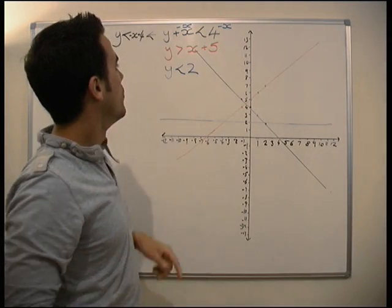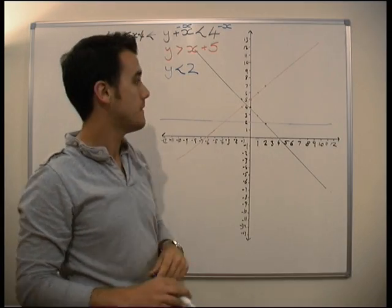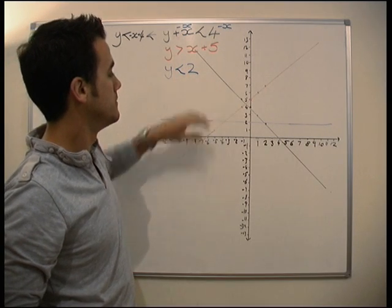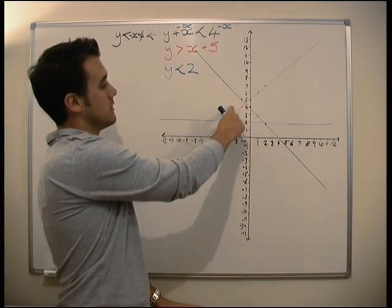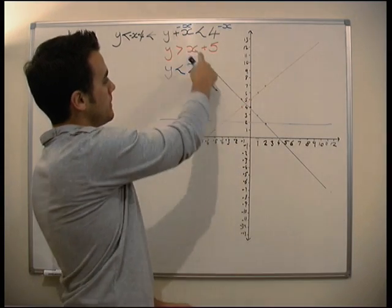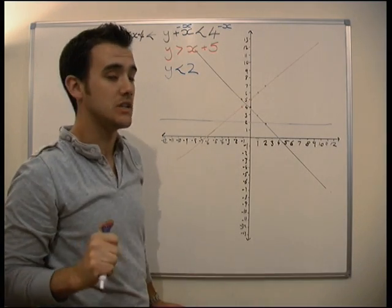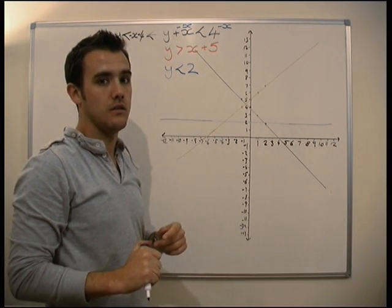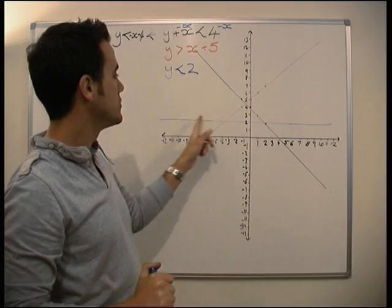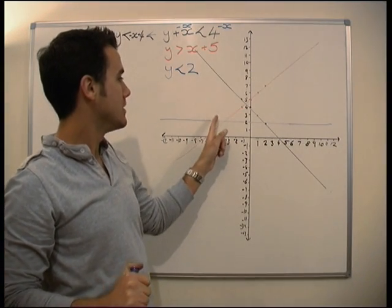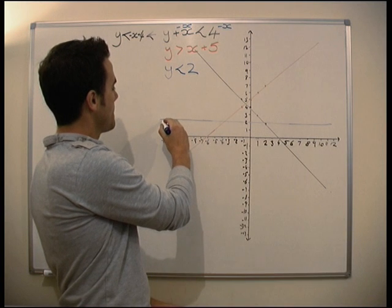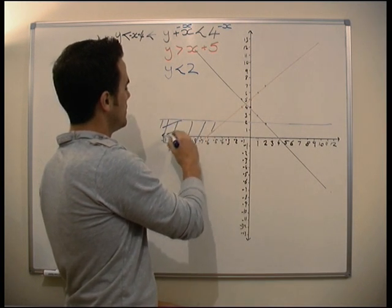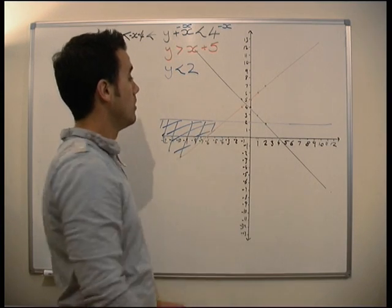So, let's look at the next one. y is greater than x plus 5. So, here's our x plus 5 line. y is greater than it. It's going to be this side of the line. Okay? So, now we've got two areas. We've got one area here, and one area here, that it could potentially be. We know that y must be greater than 2. So, y will be greater than 2. There's y equals 2. If y is greater than 2, it's up here. So, here is our region, which is satisfied by all the inequalities.